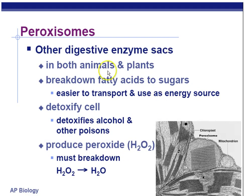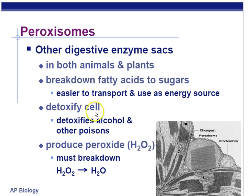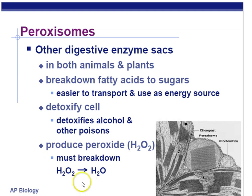Peroxisomes are other digestive enzyme sacs found in both animals and plants. One of the roles of peroxisomes is to break down fatty acids and sugars. They're also involved with detoxifying the cell — one of two organelles involved with detoxification, the other being the smooth ER. Alcohol and other poisons are detoxified by the peroxisome, so you'd imagine the liver would have a lot of peroxisomes. They produce hydrogen peroxide in the process, which is toxic to living things, and your body breaks it down with an enzyme called peroxidase into water and oxygen.